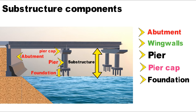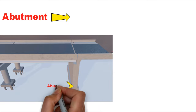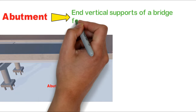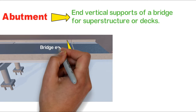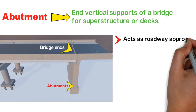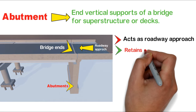Now let's discuss abutment. The abutment is the vertical support of a bridge for the superstructure. This is the abutment and the bridge, and the abutment acts as a roadway approach — this is the area where the road connects the bridge.